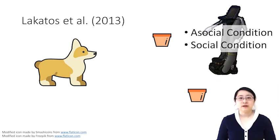As the naming played, in the asocial condition, the robot behaved mechanically, and in the social condition, the robot behaved in a social manner.